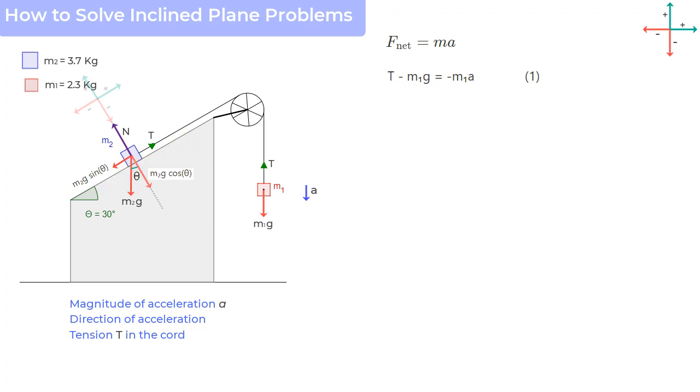things get a lot simpler to write the equation F is equal to ma for mass m2. So on the left hand side, we see tension T acting in this direction, so we will take it as positive, and m2g sin theta acting in this direction, so we will take it as negative. And we will equate this with product of m2 and a, which is assumed to be in this direction. And therefore, we are taking a plus a.